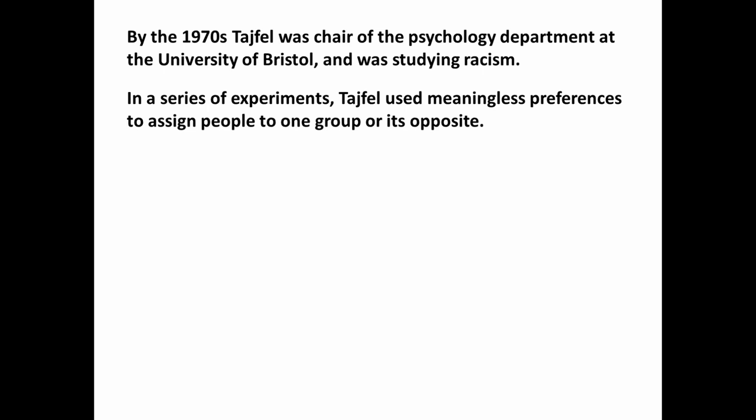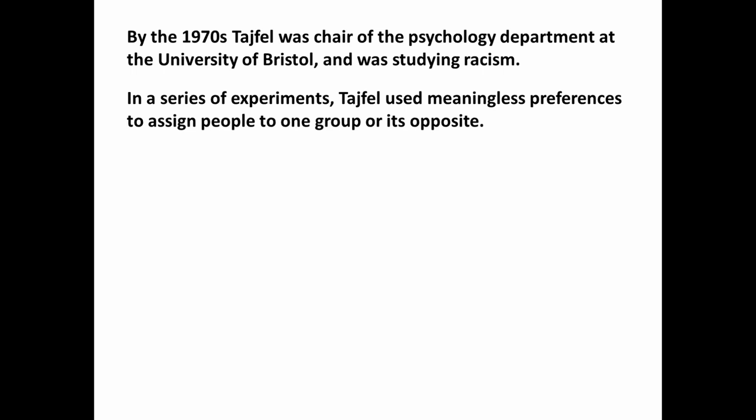This, in part, drove Tajfel to study psychology, which he did in Britain. By the 1970s, Tajfel was chair of the psychology department at the University of Bristol and was actively studying the topic of racism, probably because of what had happened to his family and his experience as a prisoner of war. In a series of experiments, Tajfel used meaningless preferences to assign people to one group or the other — forming essentially the root of a new theory that took over from realistic conflict theory, which by the 1970s was no longer seen as directly applicable.